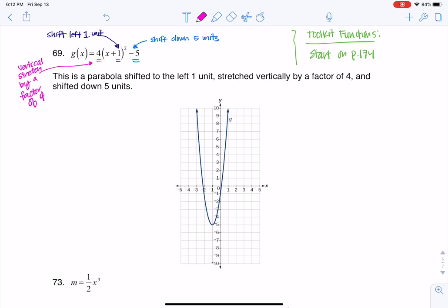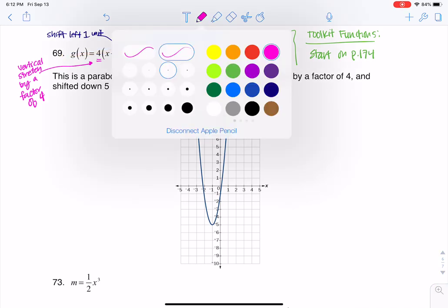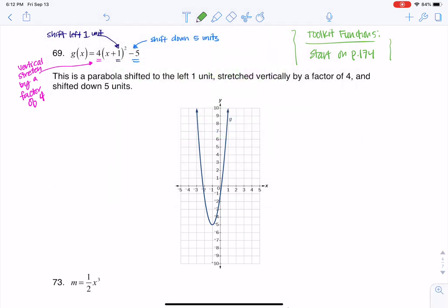Now, how does this relate to our toolkit function? If you wanted to at this point, you could take that function, put it into the y equals part of your calculator or whatever technology you're using, and get the graph. But I'm going to try and do this by hand just to demonstrate a point. So when I look at this function, the parent function it's based off of, the toolkit function it's based off of, is y equals x squared. And I can see that because of the square there. Everything else is just window dressing. The four, the one, and the five, they're just window dressing. They're shifts and stretches.